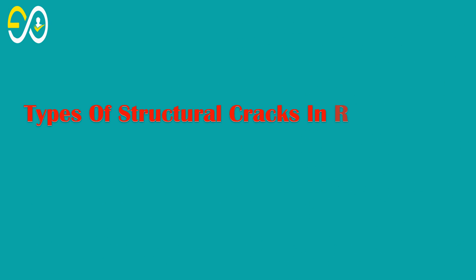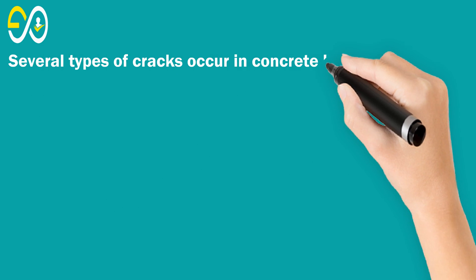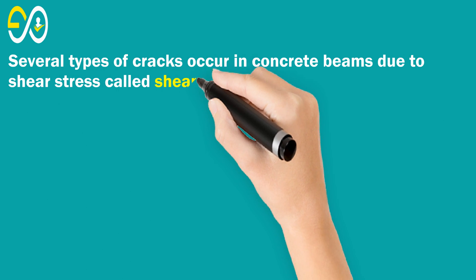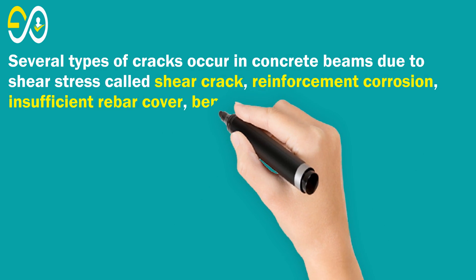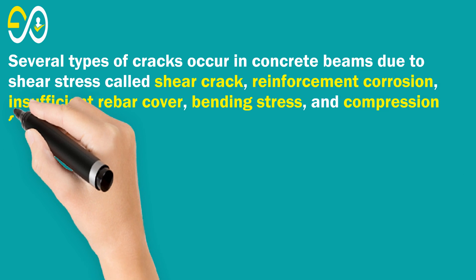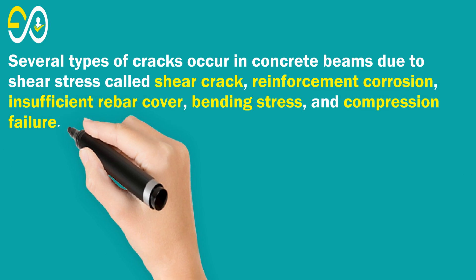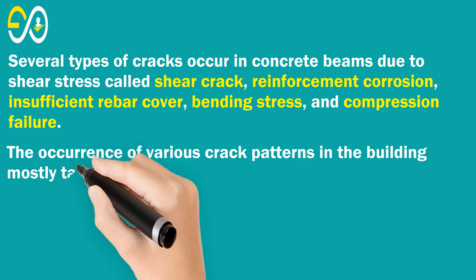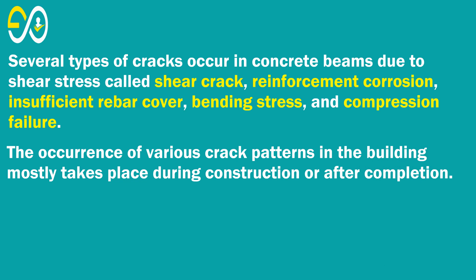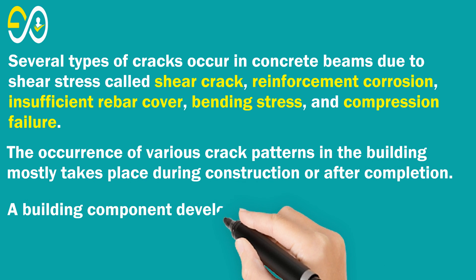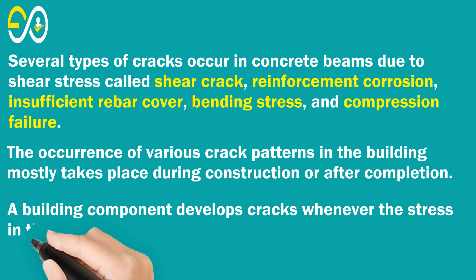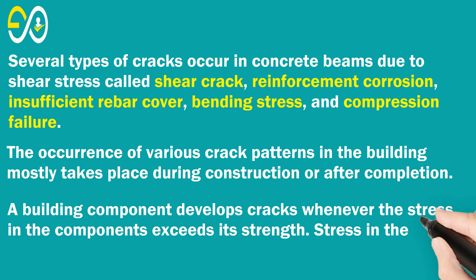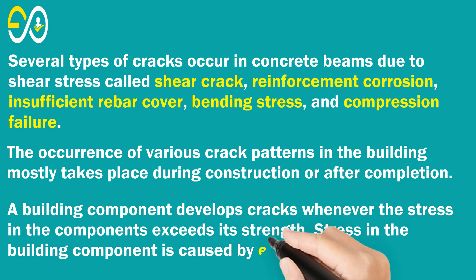Types of Structural Cracks in Reinforced Cement Concrete Beams and Their Causes. Several types of cracks occur in concrete beams due to shear stress, reinforcement corrosion, insufficient rebar cover, bending stress, and compression failure. The occurrence of various crack patterns in a building mostly takes place during construction or after completion. A building component develops cracks whenever the stress in the component exceeds its strength, caused by externally applied loads.